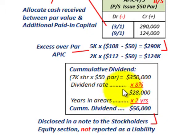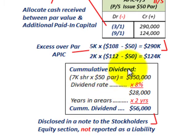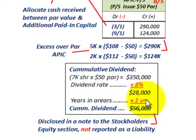With this cumulative dividend, we have to disclose it in the notes to the stockholders' equity section of the financial reports. It is not reported as a liability at this point — it is only noted in the stockholders' equity section of the balance sheet as a year-end disclosure. The formula is par value times shares outstanding times the dividend rate, times the number of periods outstanding.